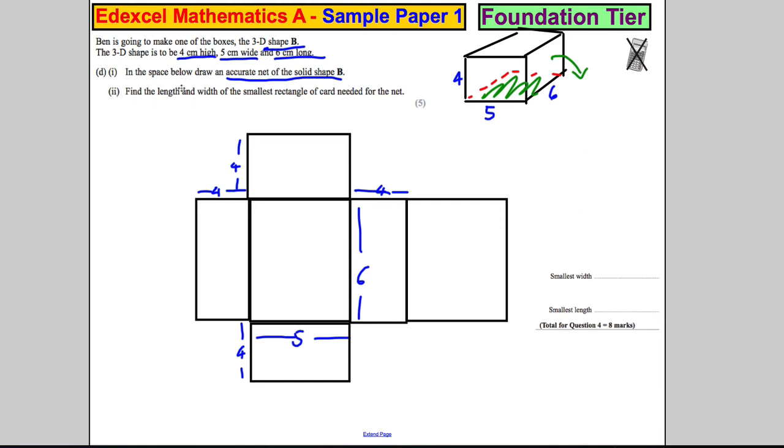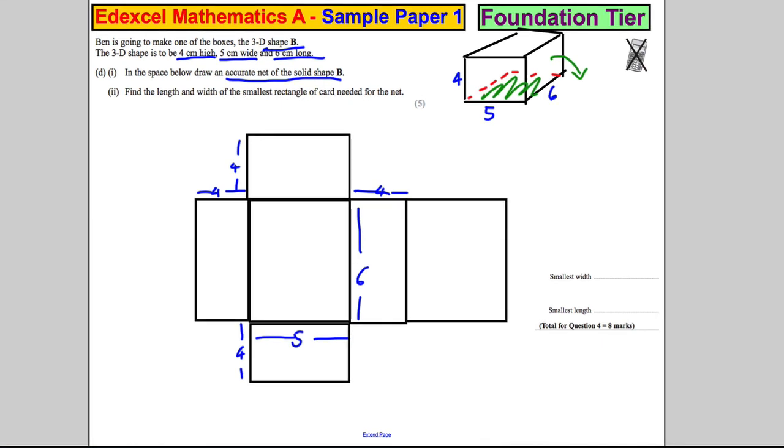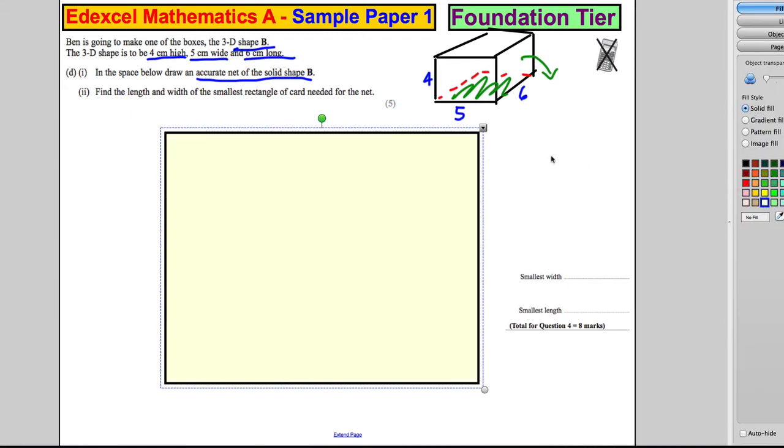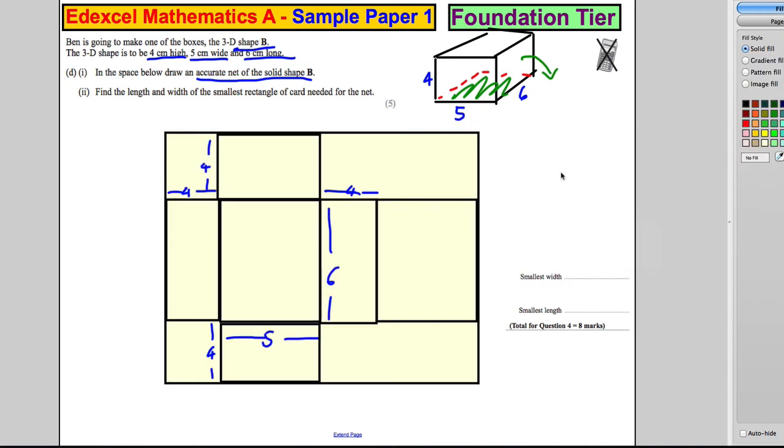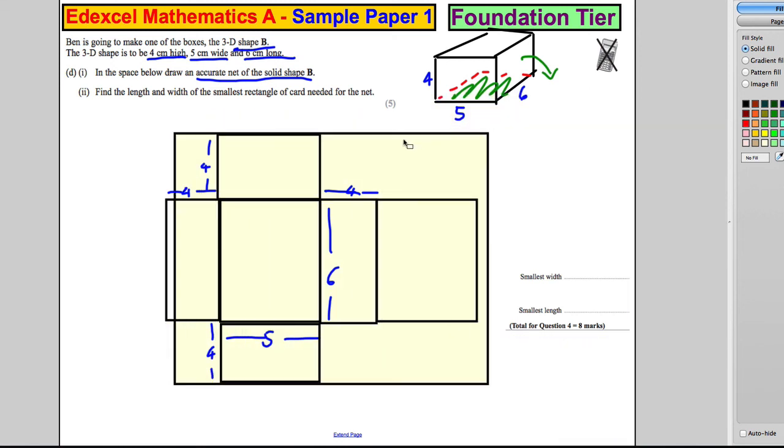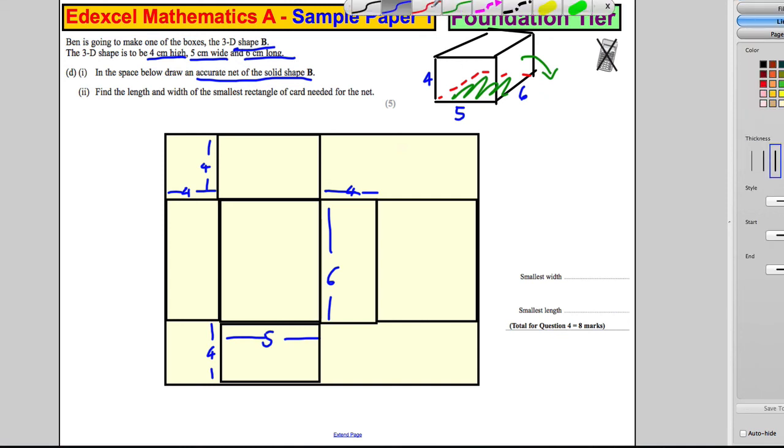Okay. Then it says, part two, it says, find the length and width of the smallest rectangle of card needed for the net. Okay. So I'm imagining a sheet of paper that I could use to cut this out, to draw this on and cut this out. So let's draw that sheet of paper. The sheet of paper would look something like that, wouldn't it? I'm actually going to color that in a light color, just to show you what I mean by that. That would be the sheet of paper there. So if I take that away, I want a sheet of paper that would perfectly fit that.